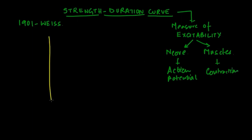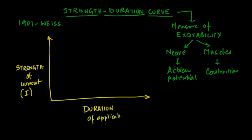So Weiss studied the stimulation of nerve tissues and plotted the graph, plotting the strength of the current required to stimulate on the y-axis and the duration of the stimulus on the x-axis, as shown here, with I denoting the current and D denoting the duration.